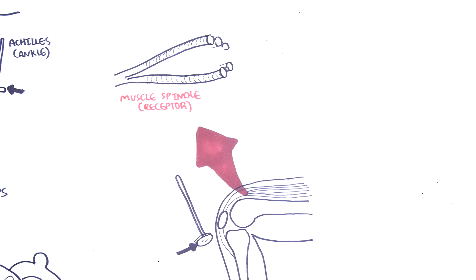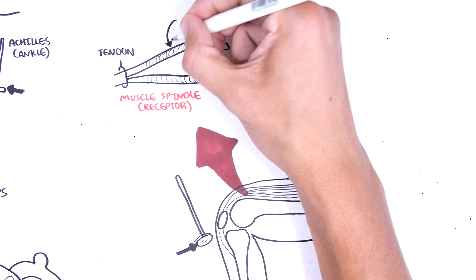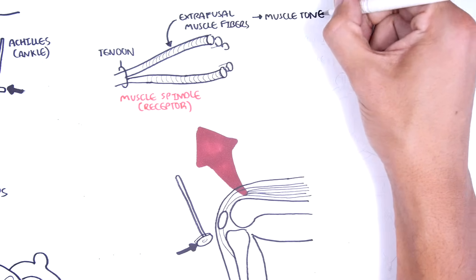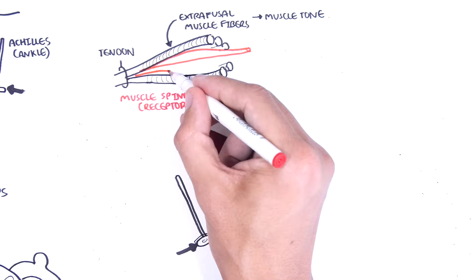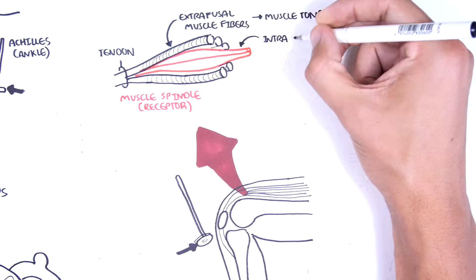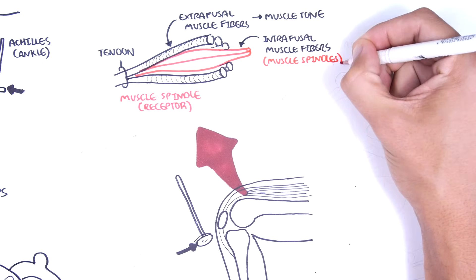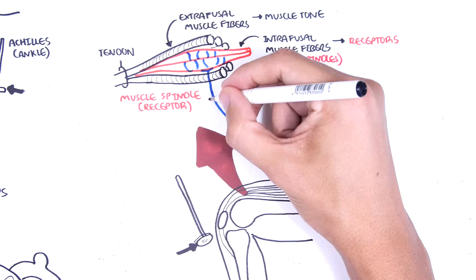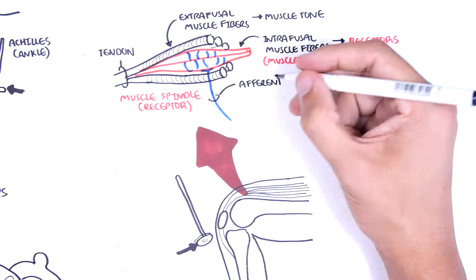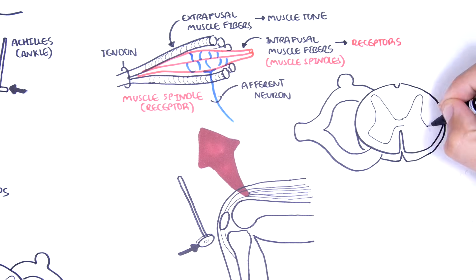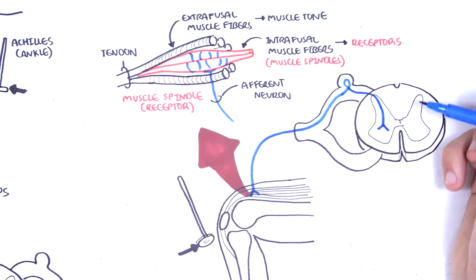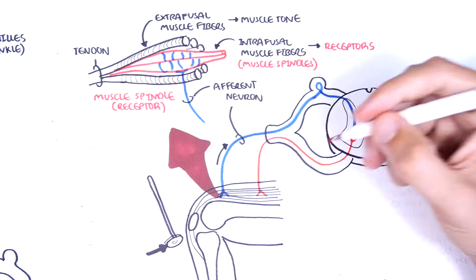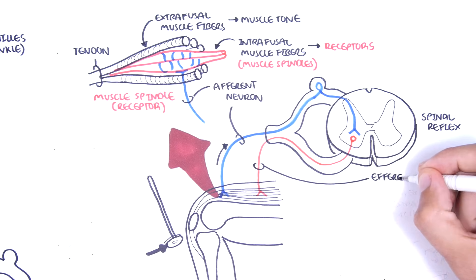Muscle spindles are receptors within muscle. Here is the tendon of the muscle and here are the muscle fibers, which are called extrafusal muscle fibers, because these muscle fibers are responsible for muscle tone, muscle contraction and relaxation. The intrafusal muscle fibers, surrounded by the extrafusal muscle fibers, are the muscle spindles. Muscle spindles are essentially receptors which respond to stretch and are innervated by sensory neurons, which are your afferent neurons. This is a monosynaptic reflex because it only involves one synapse.